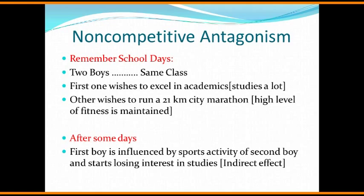There is no competition between them. The athlete cannot compete with the academically oriented person — they can each be king of their own speciality, but there is no competition between them. That's part of non-competitive antagonism. After some days, the scenario changes: the first boy who wants to excel in academics gets influenced by the sports activity of the second boy. He sees the second boy always running around, maintaining fitness, being more active, and over a period of time the first boy starts losing interest in his studies and slowly gravitates towards the actions of the second boy.